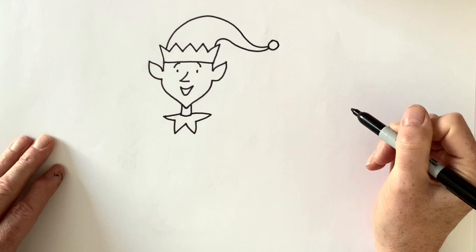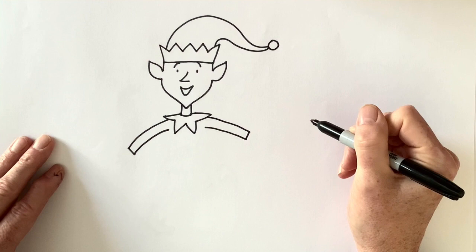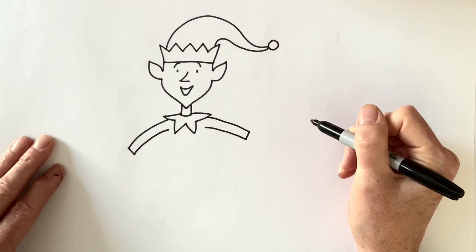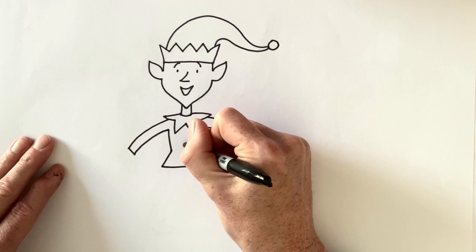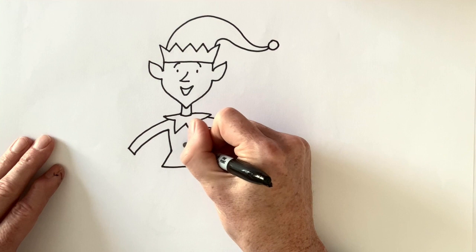What shall we draw next? We'll draw one arm going this way and one arm going this way. And then we're going to draw two lines sloping downwards like that to his waist and then two lines going outwards like that to make his top. And add a buckle and a belt there.